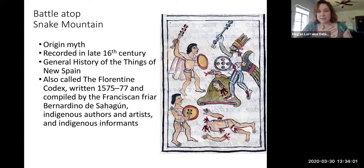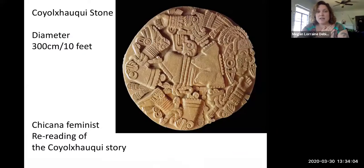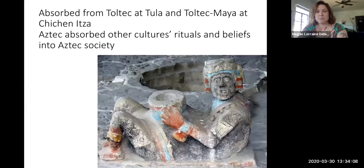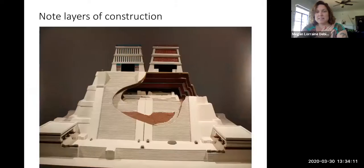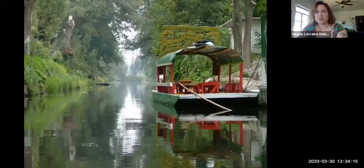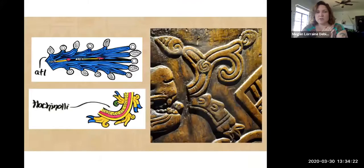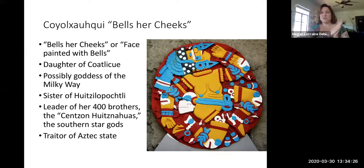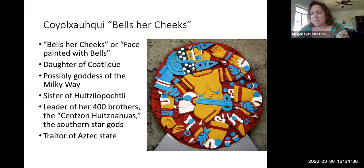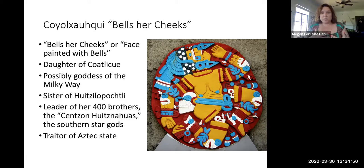So she gets impregnated by this feather. Then her daughter Coyolxauhqui — Lady Bells Her Cheeks — comes with her 400 brothers to attack her mother. It's not really clear why Coyolxauhqui is upset, but she wants to prevent the birth of her brother Huitzilopochtli. So they attack their mom, Coatlicue, who is pregnant with Huitzilopochtli the war god.